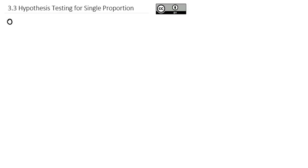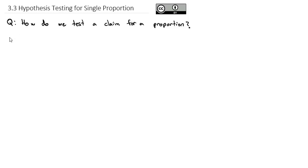A significant part of statistics is testing a claim to see if we can really believe it's true. So our question for the day is how do we test a claim? Today we're going to specifically focus on a claim for a proportion. The process we're going to talk about does work for all sorts of claims, but specifically today we're going to stay in the context of a proportion.